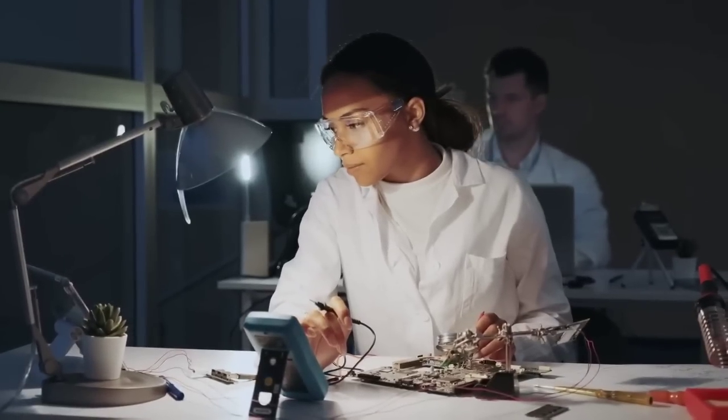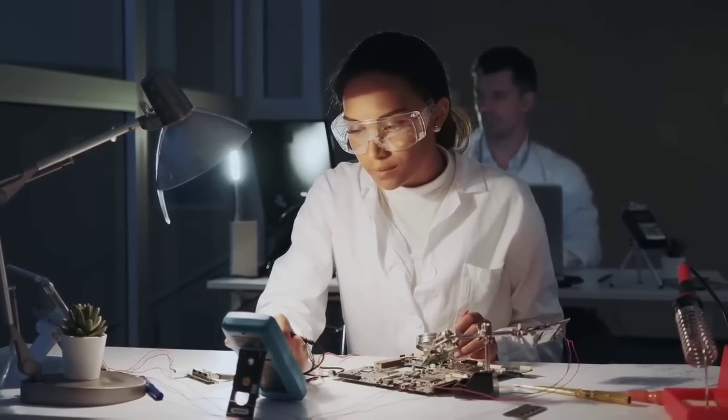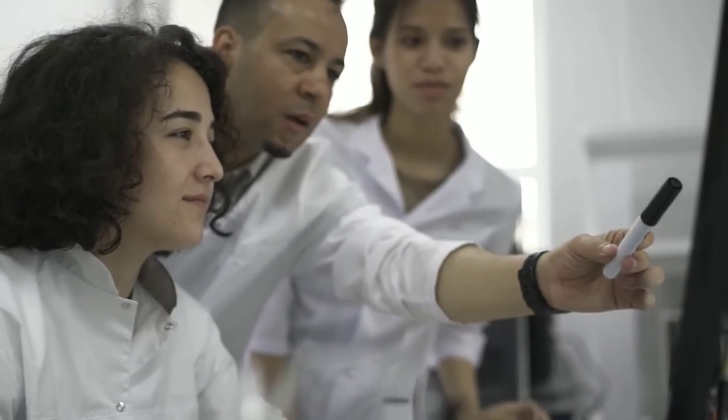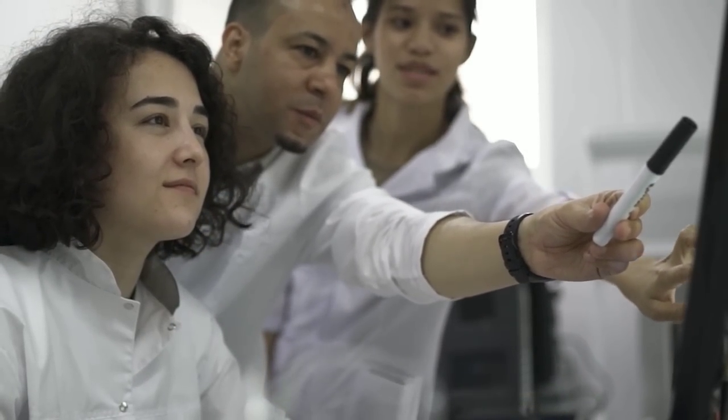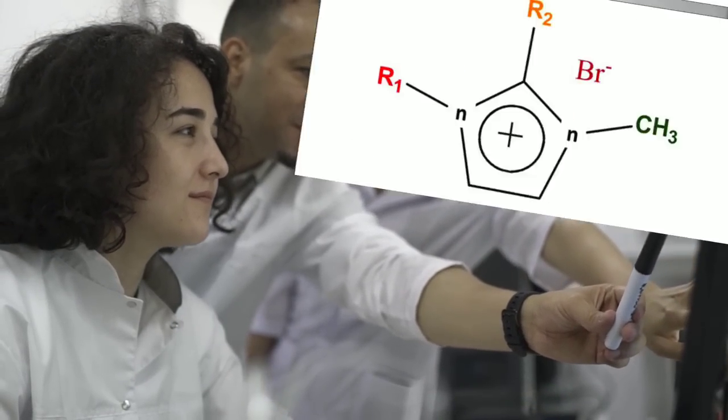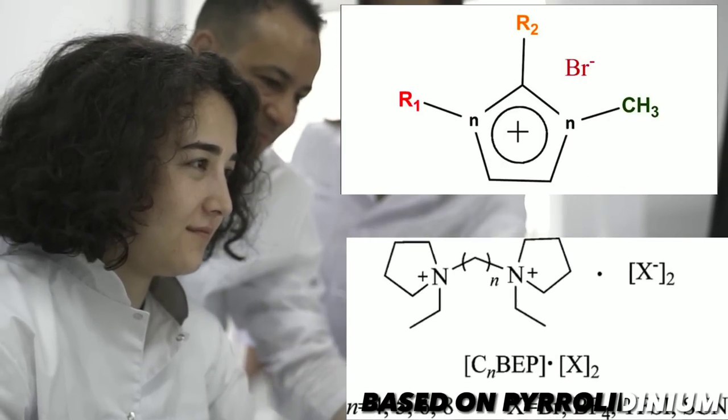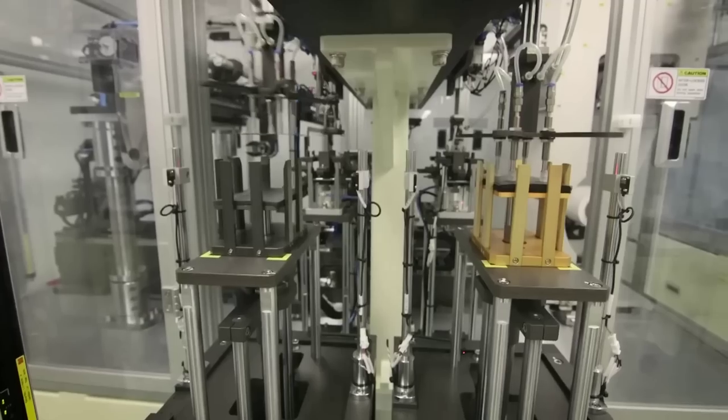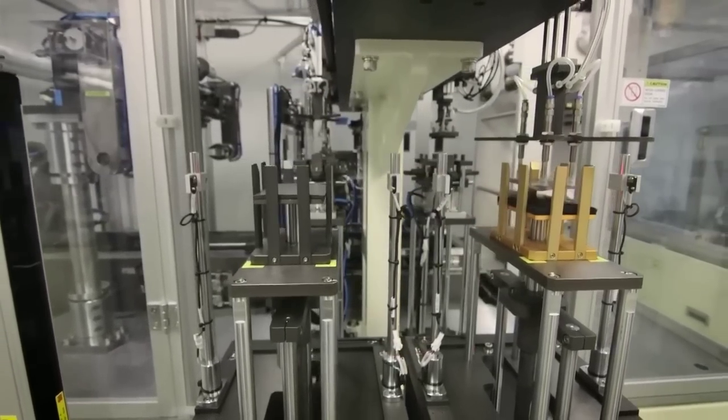They also have a wide electrochemical window, which means that they can withstand high voltages without breaking down. The scientists chose two specific ionic liquids for their electrolyte, one based on imidazoleum and one based on pyrrolidinium. They found that by mixing these two ionic liquids in a certain ratio, they could create a synergistic effect that enhanced the performance of the battery.